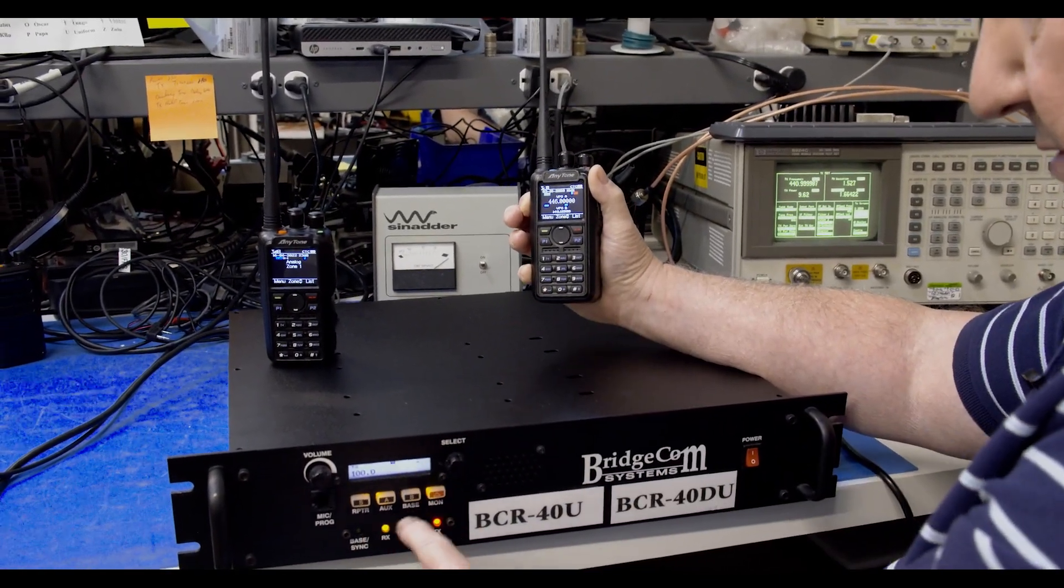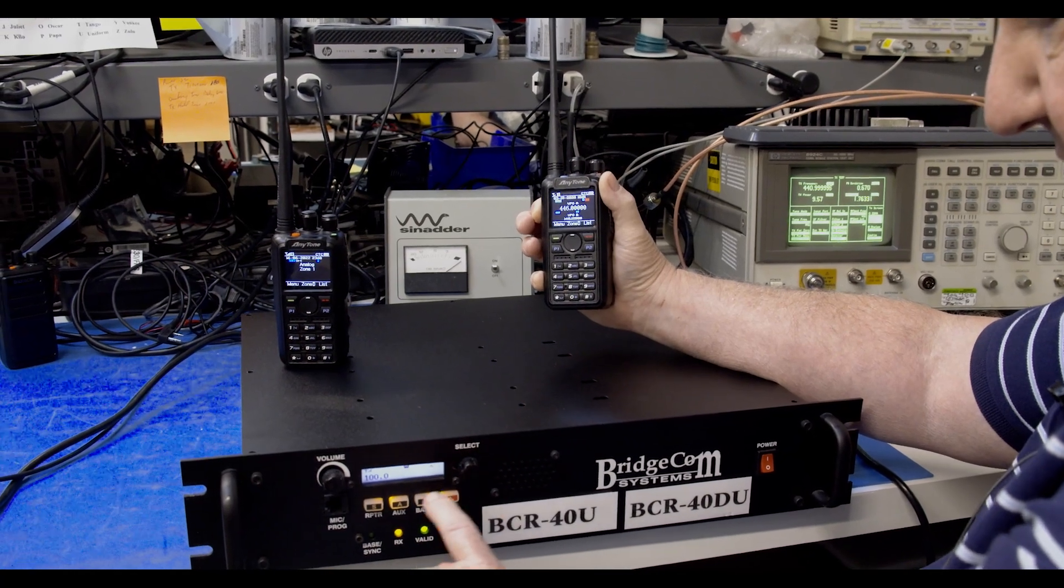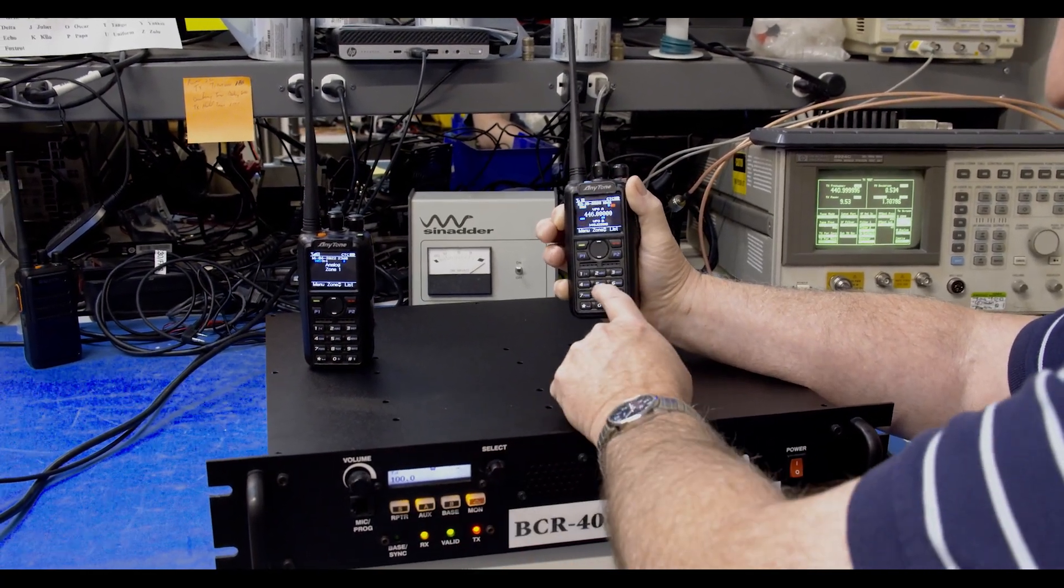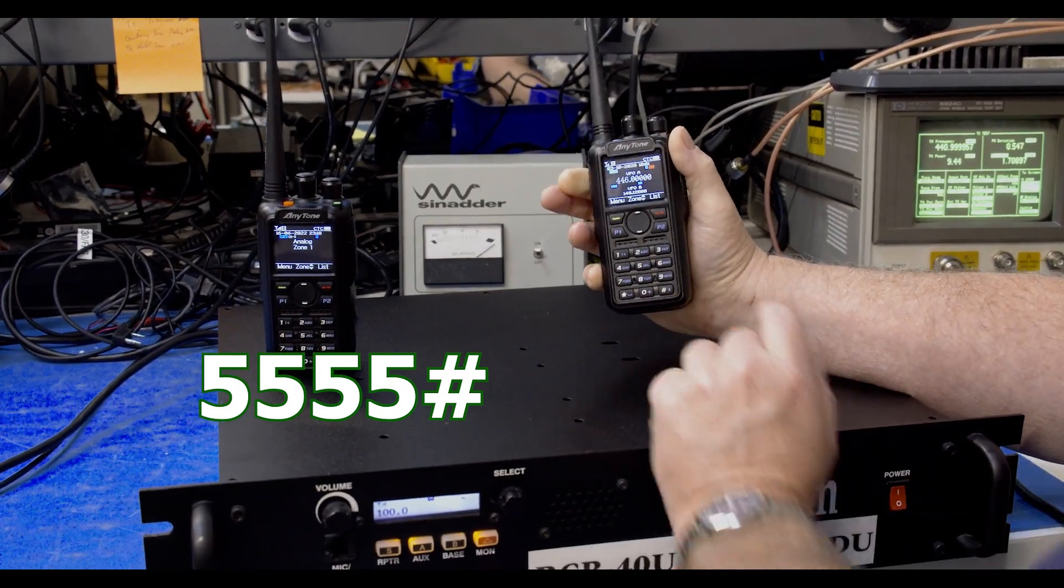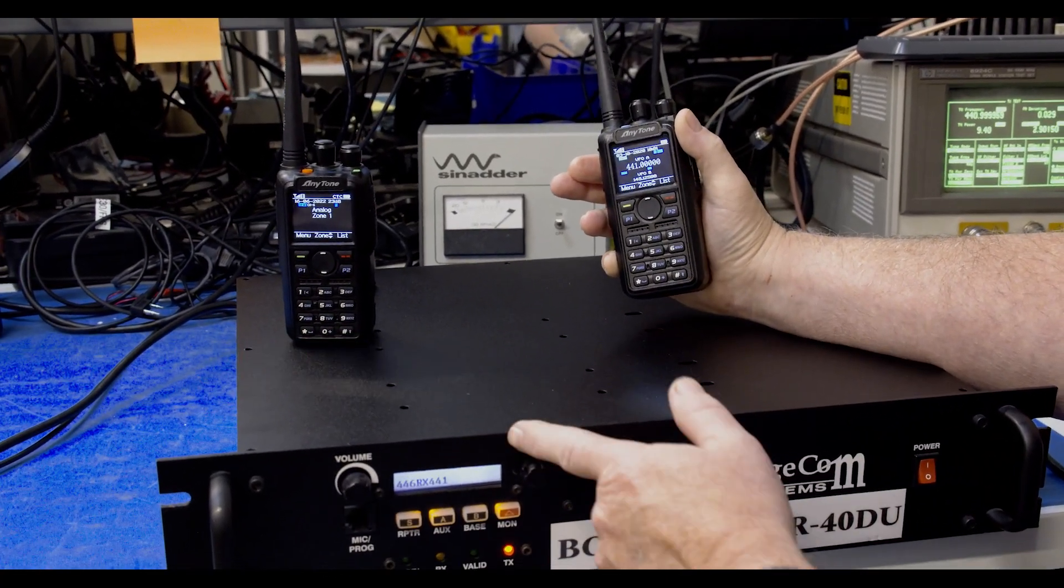We're going to simply reboot the repeater and you'll see it reboot from here. So we're going to enter 5555 pound and it reboots.